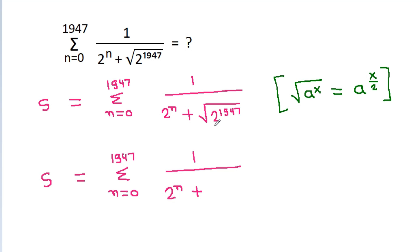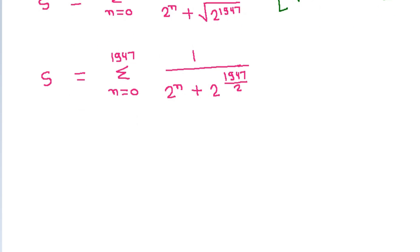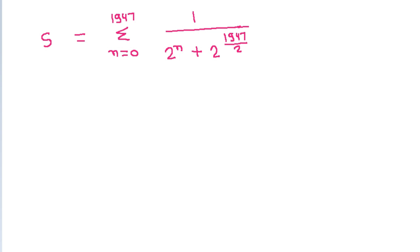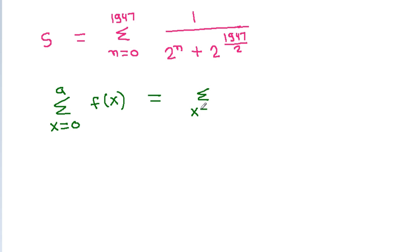So the square root of 2^1947 will be 2^(1947/2). Also recall the property that the summation from x equals 0 to a of f(x) is equal to the summation from x equals 0 to a of f(a minus x).